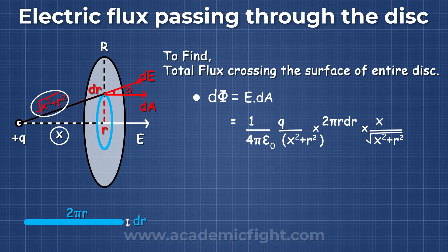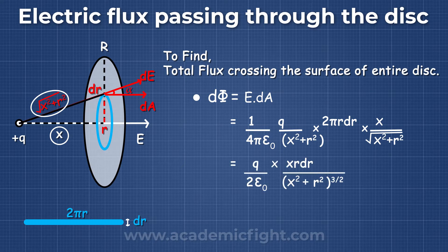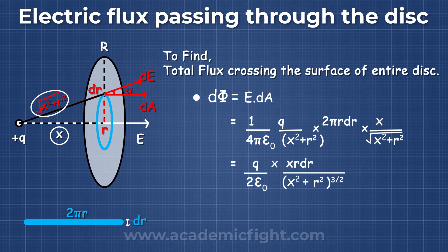On solving the equation, we get dφ = q/(2ε₀) × x × r dr / (x² + r²)^(3/2).